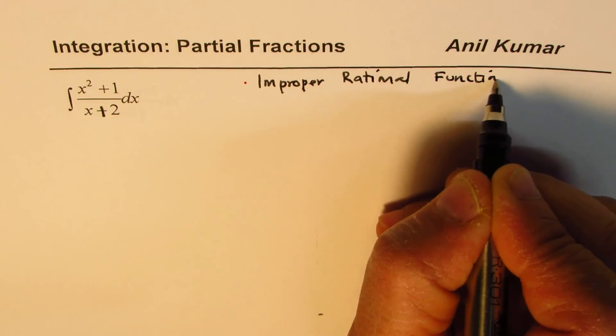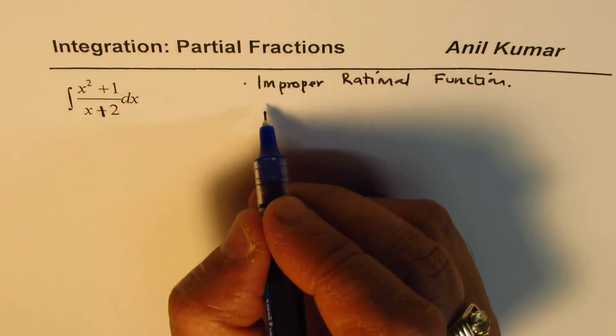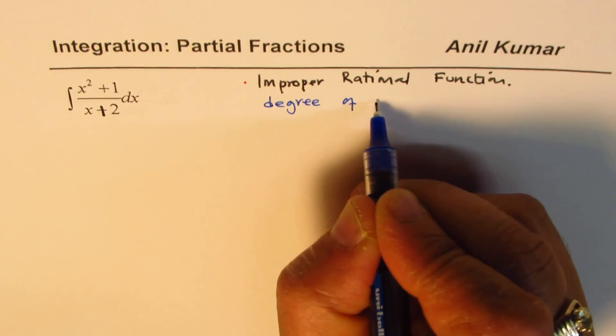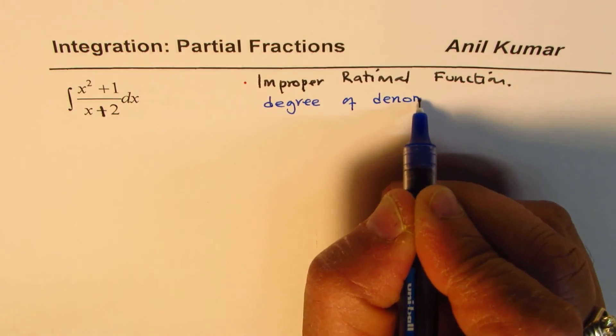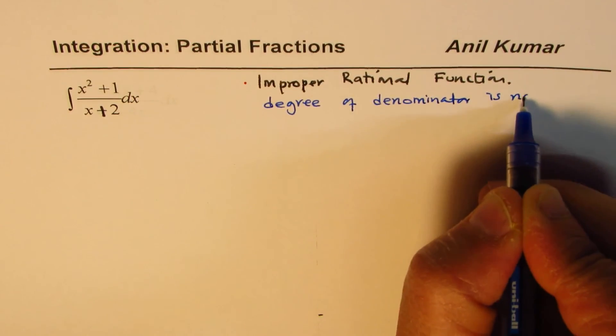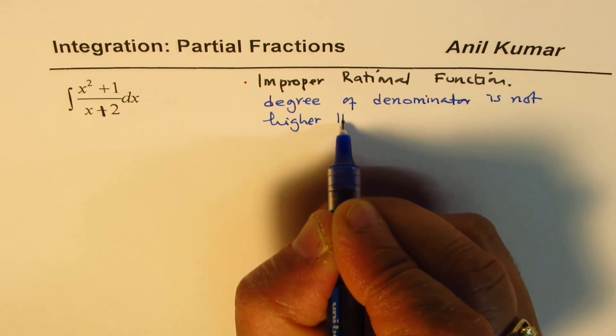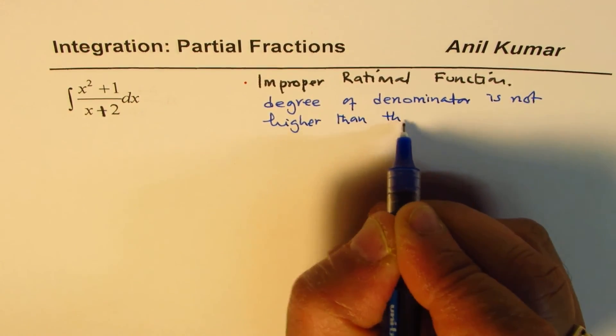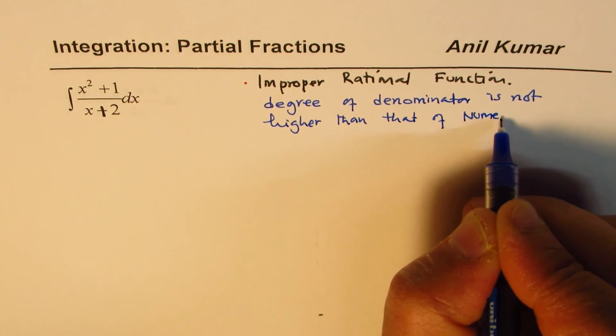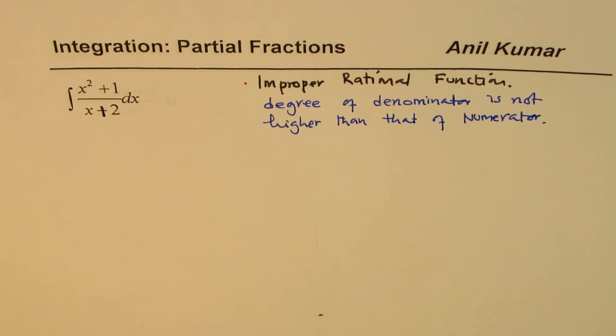Now what do that mean? It means that the degree of denominator is not higher. So the degree of denominator is not higher than that of numerator. So when that is the case, what should you do?